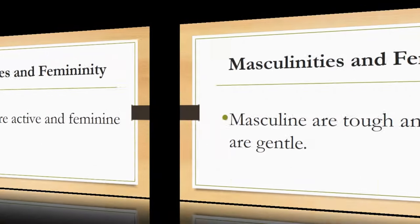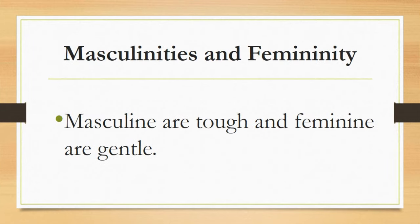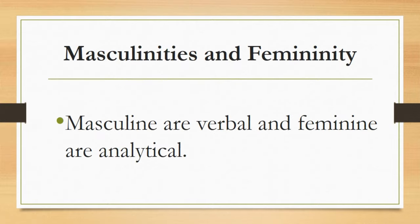The next quality: masculine are tough and feminine are gentle. Males are very rough and tough — they have the stamina to bear the toughness of the environment around them, and their tough nature makes them able to firmly stand in tough situations. On the other hand, females can only gently handle things. The following quality: masculine are verbal and feminine are analytical — males don't think deeply before speaking and just say whatever comes to their tongue, while females think carefully about the words they are going to speak.